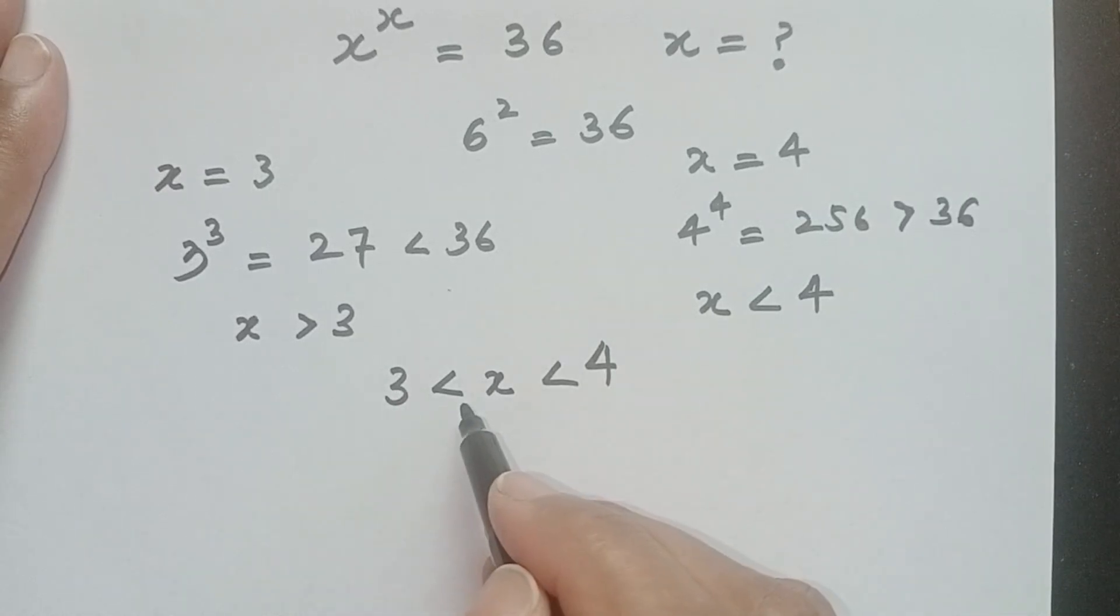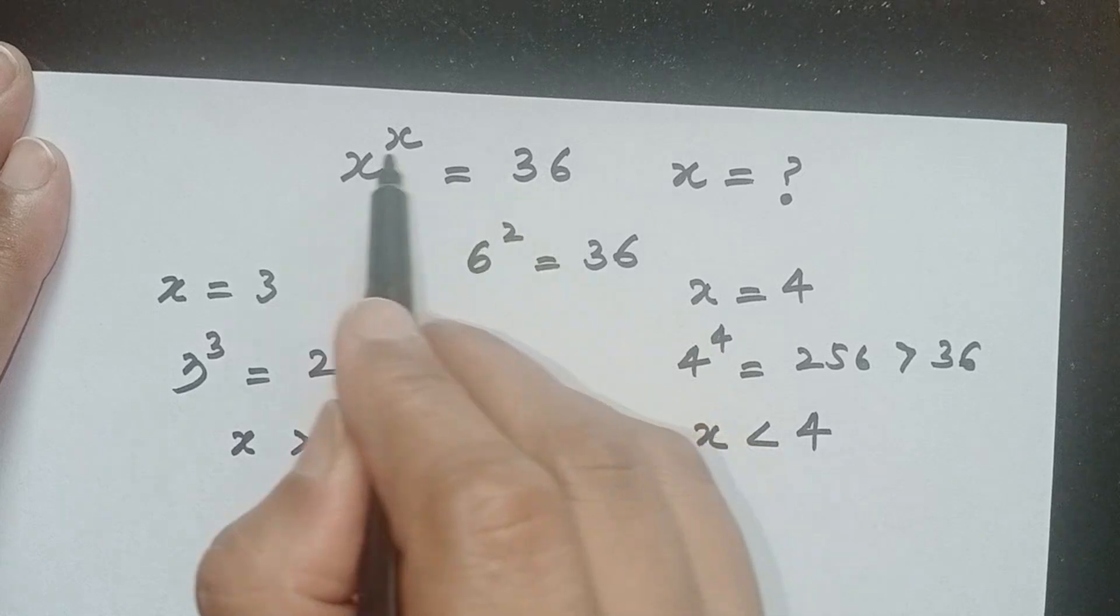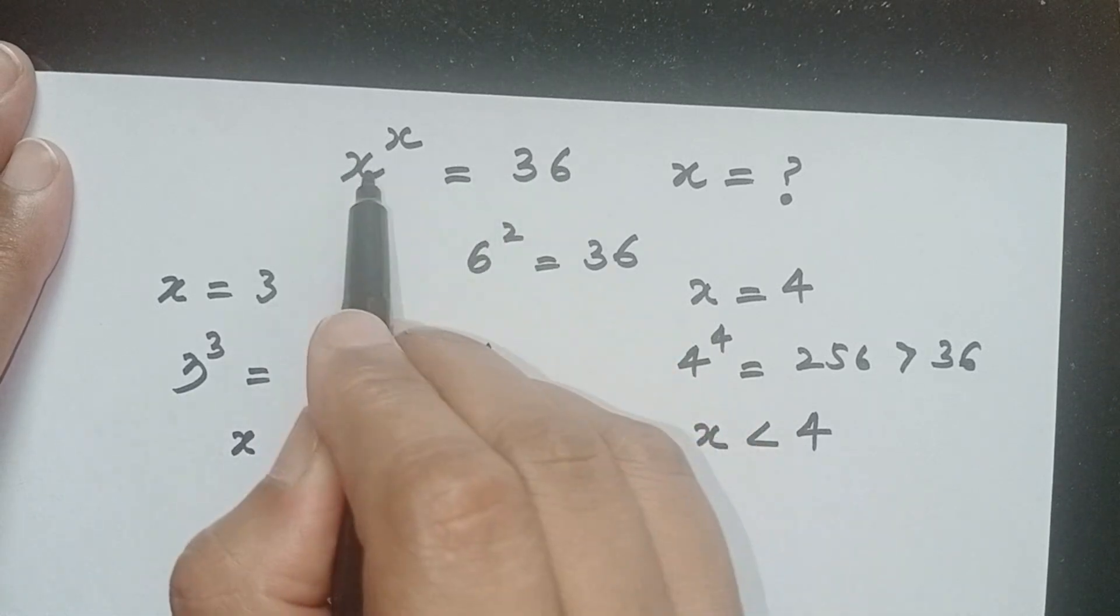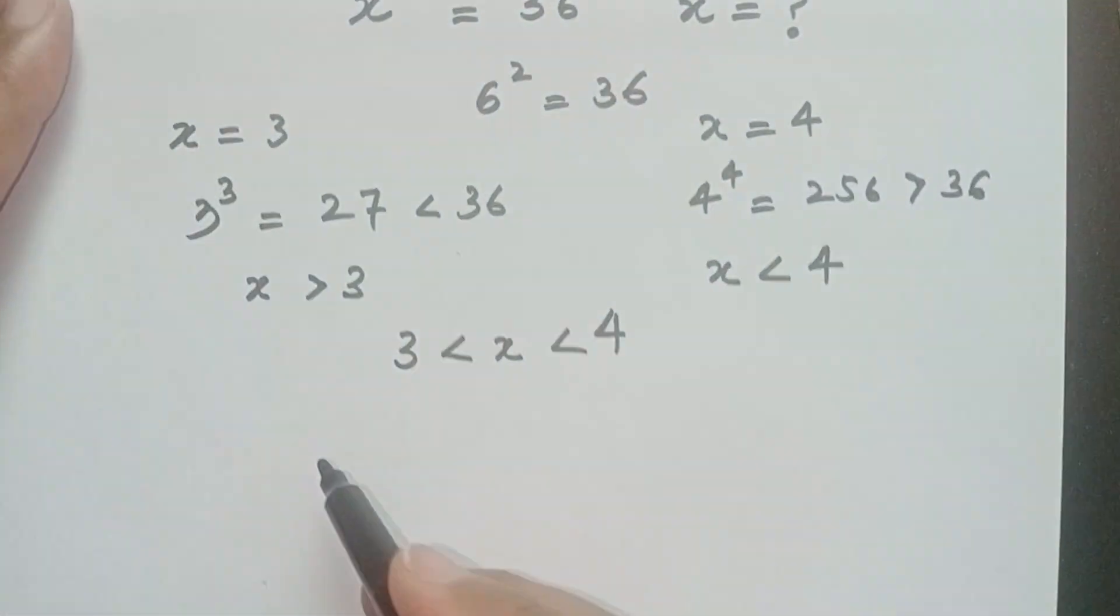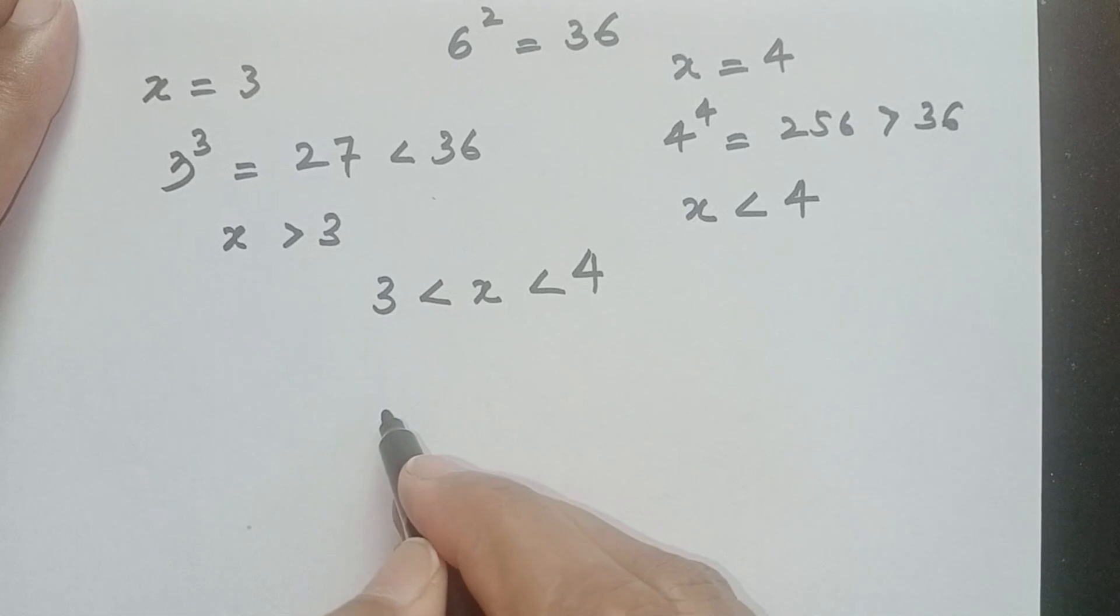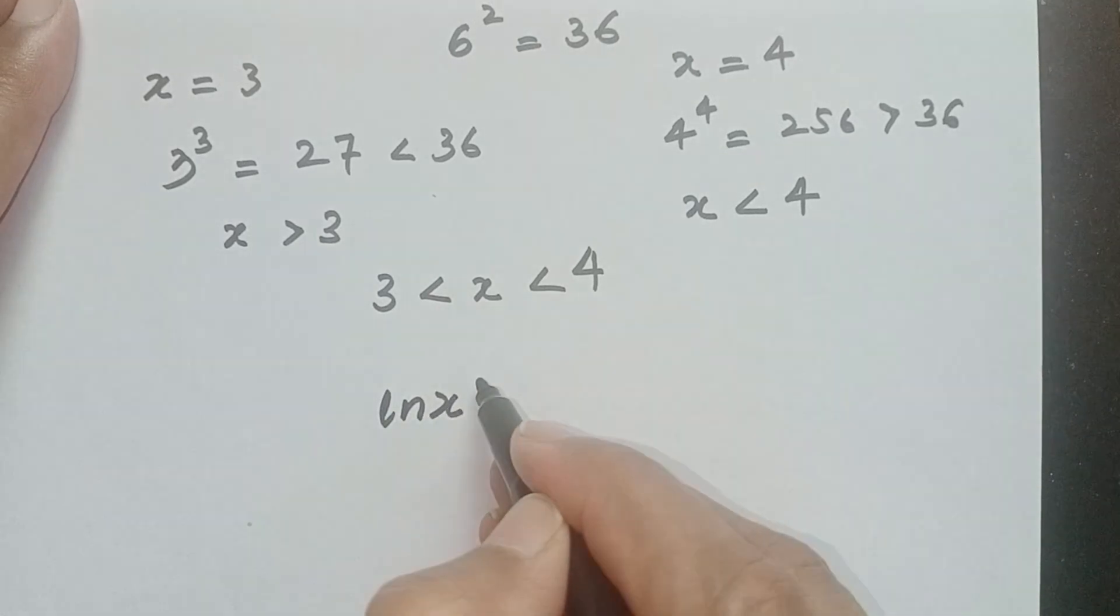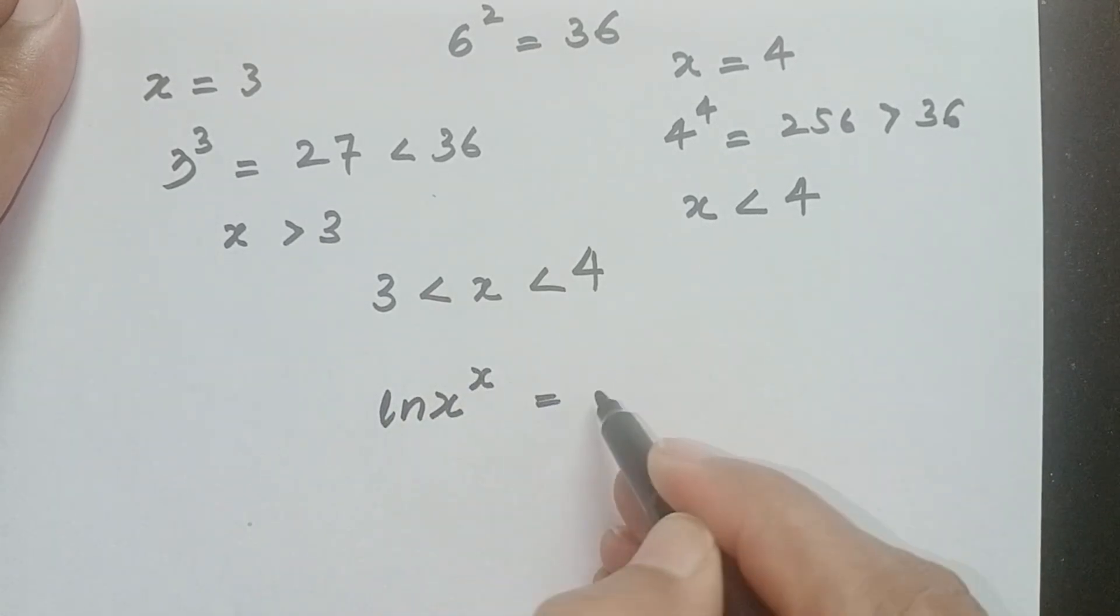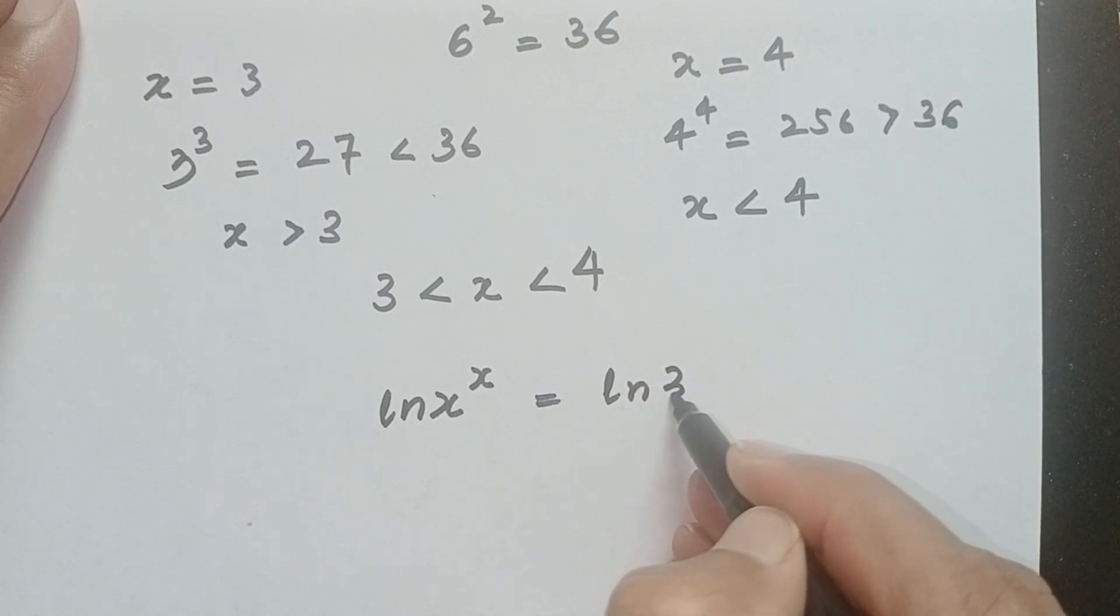So let's find out the value of x. To find out the value of x, first of all we will take ln on both sides of this equation. Taking ln on both sides: ln x power x is equal to ln 36.